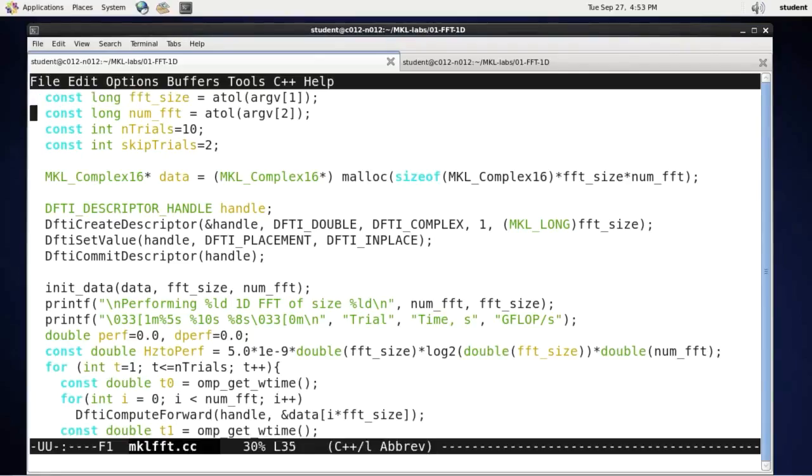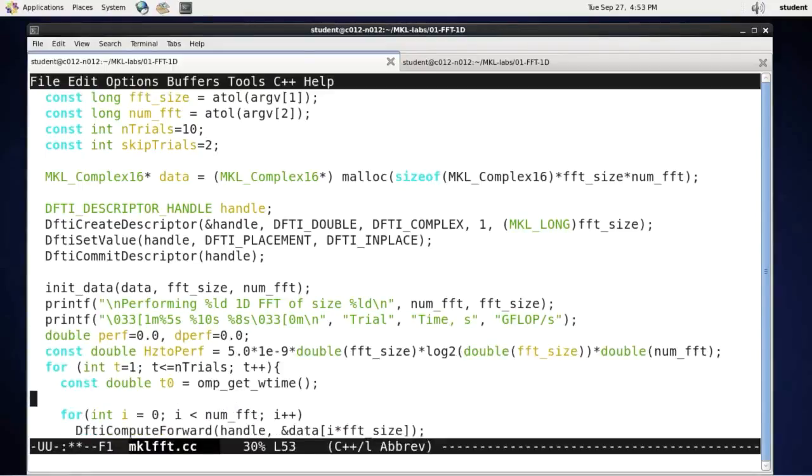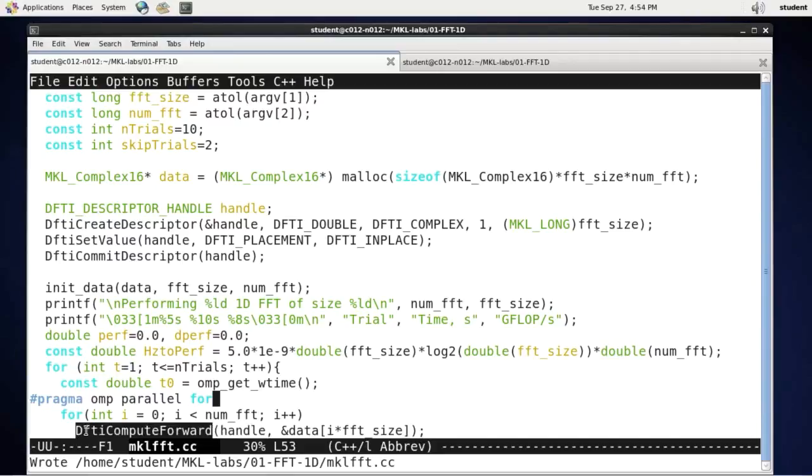In my code for this loop, I will simply put pragma omp parallel for. What it's going to do is it will create multiple threads and distribute these iterations between them. Thankfully, the data for all iterations is independent and handle is a read-only object, so I will call from each thread dfti_compute_forward.